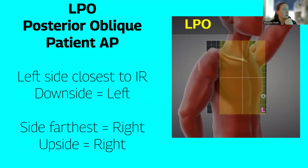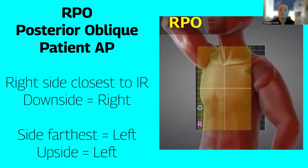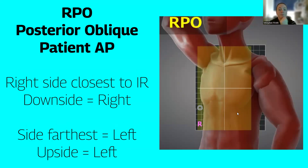For posterior obliques: LPO means the left side is down or closest, and the right side is pulled away — that's the upside or farthest. RPO is the reverse: right side is down or downside closest, left side is up or farthest.